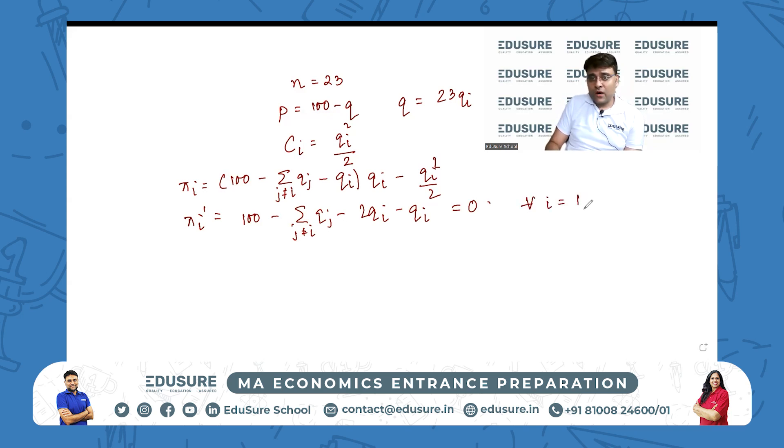This holds for all i = 1, 2, up to 23. This thing will hold for q1 also, q2 also, q3 also. Ultimately I'll get the same equation for each and every firm. So qi = q, where i = 1, 2, up to 23. The quantity produced by each firm will be the same because the profit equation is similar for each firm.